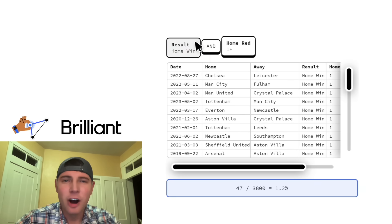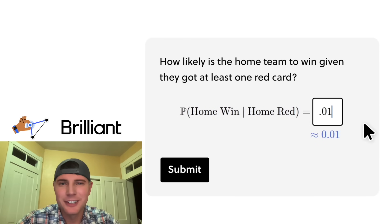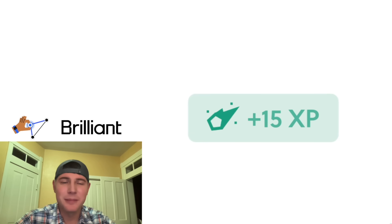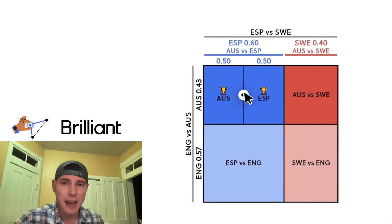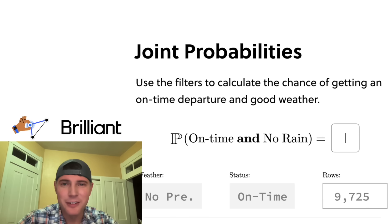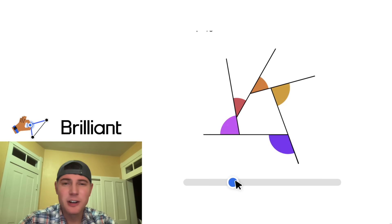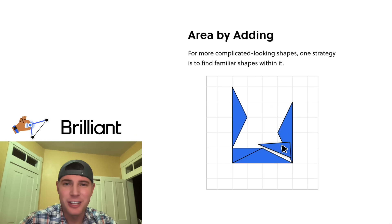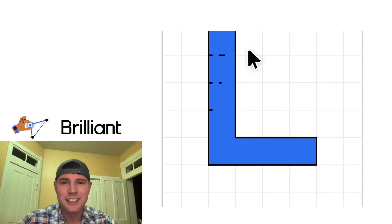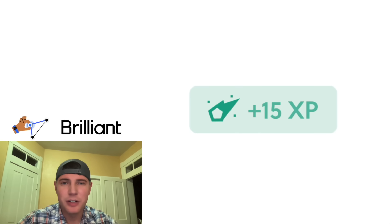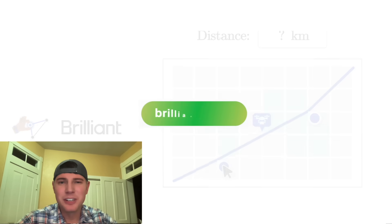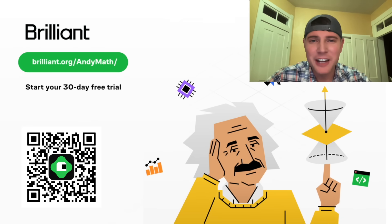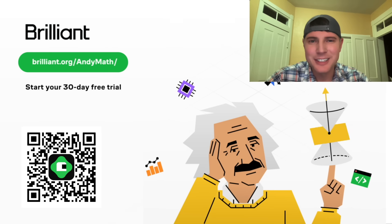Speaking of Brilliant, let's talk about them. Brilliant has thousands of lessons in math, data analysis, programming, and AI, and all of them are interactive — the most effective way to learn. They have lessons covering all the geometry and algebra we used in this video. If you want to try it, they have a free 30-day trial at brilliant.org. You can also get 20% off an annual premium plan — link in the description.